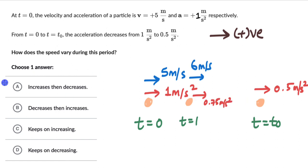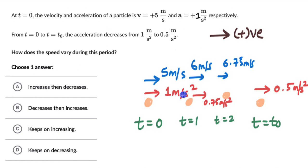After one more second when t = 2, the speed will increase by 0.75 meters per second, making it 6.75 meters per second. So even when the acceleration is decreasing, the speed is still increasing — just not by the same amount each second. It increased by 1 m/s in the first second, then 0.75 m/s in the next, because the acceleration itself is decreasing. Speed is still constantly increasing.